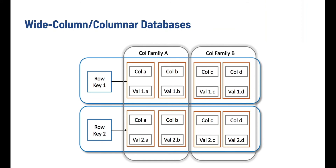Then, we have the wide column or columnar databases. Wide column databases use tables, columns, and rows, but unlike RDBMS, each column is stored as a separate object or database and are kept separate from each other. This is why data types used inside this table and the formatting used inside each column can vary from row to row, even though they are technically part of the same table. Wide column databases are very easy to manage since each column is stored separately, and they are truly scalable, meaning you can scale each column in a different way without affecting any of the other columns.